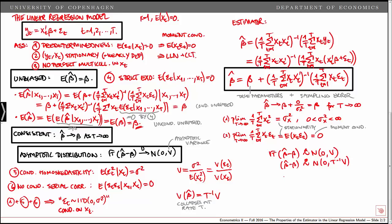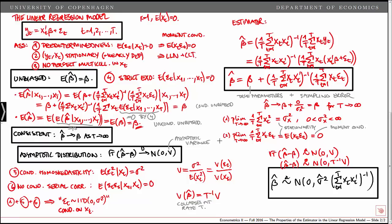Finally, we can use this to show that beta hat has an asymptotic normal distribution with mean beta, where we replace T inverse v with natural estimators. The T's cancel out and we are left with sigma hat squared multiplied by the sum from t equals 1 to capital T of xt xt prime, inverted. This is the asymptotic distribution of the estimator, which we can use to conduct inference, to do tests, and so on. That's all for now. Thanks for watching.